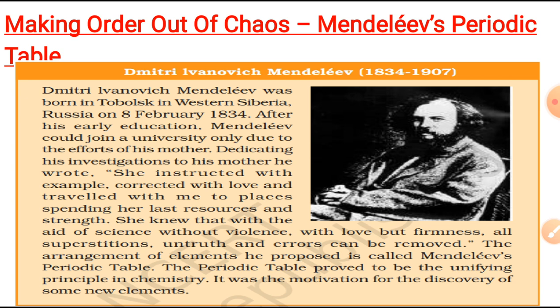Mendeleev, a Russian chemist, was the most important contributor to the early development of the periodic table of elements, wherein the elements were arranged on the basis of their fundamental property — atomic mass — and also similarity of chemical properties. Only 63 elements were known at that time when Mendeleev was classifying these elements.